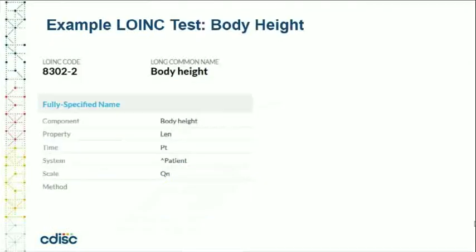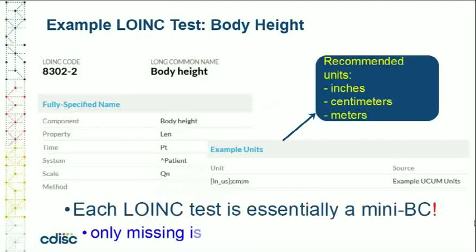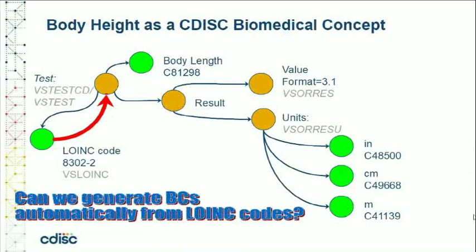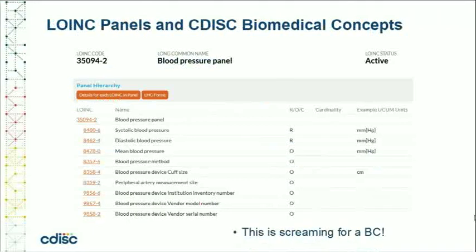Here is an example description of the LOINC code for body height. It essentially contains everything we need to work as a biomedical concept, except for the mappings to SDTM. As such, I consider it an incomplete BC. The question quickly arises whether one could generate biomedical concepts starting from LOINC codes in an automated way. If we look at LOINC panels, which are logical groupings of related tests — like the blood pressure panel — we see that they look very much like BCs, and are screaming for automated generation.